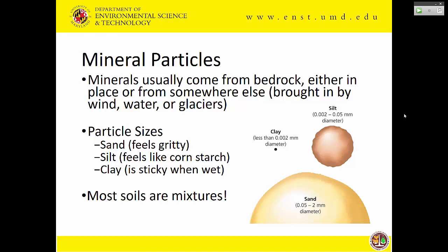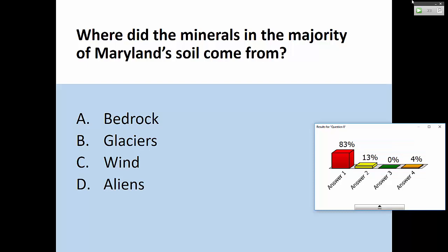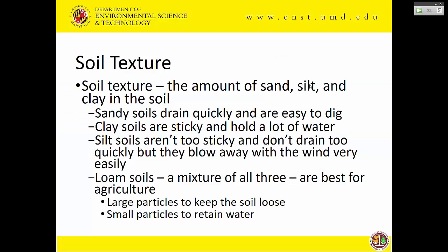Minerals in this area mostly come from bedrock here in Maryland. Places like upstate New York or Minnesota had more recent glaciation, which is why they have more natural ponds and lakes. Down here in Maryland it's been a very long time since a glacier came this far. There are some areas with a little loess, which is usually silt, but it's mostly bedrock here. Now, the term you need to know is soil texture — that's the amount of sand, silt, and clay in a soil.